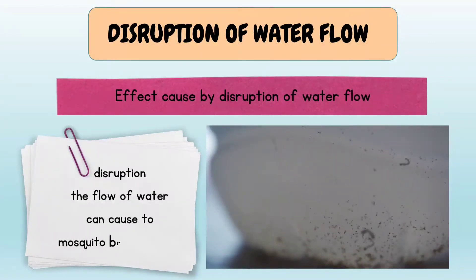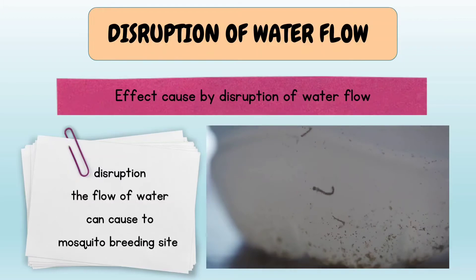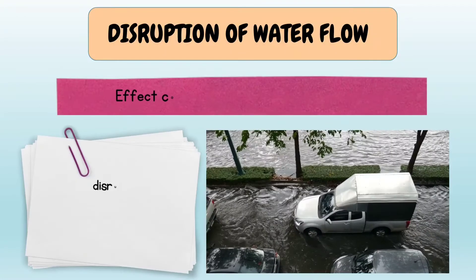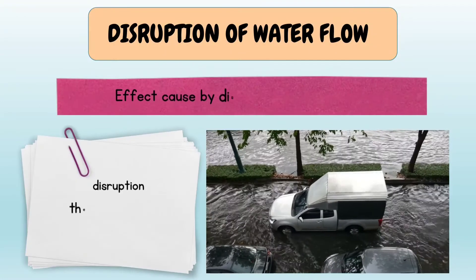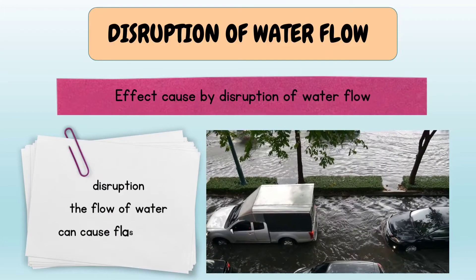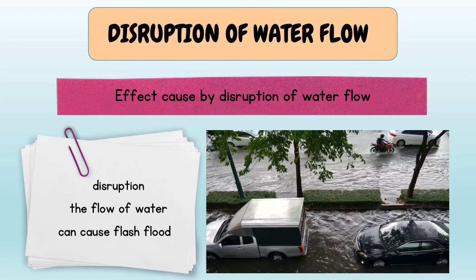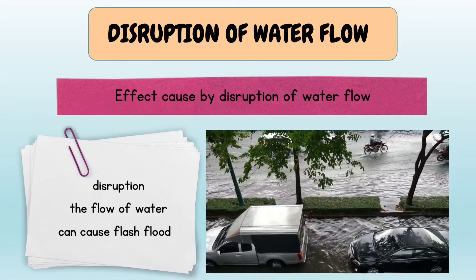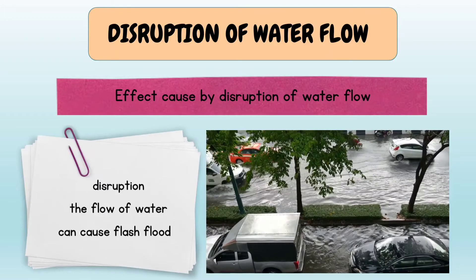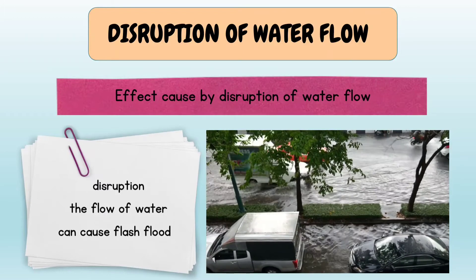Disruptions of the water flow can cause a mosquito breeding site. Flash floods can also occur when the water flow is being disrupted.